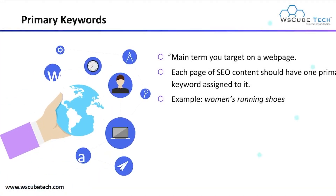In the case of primary keywords, these are the main terms you target on your web page. For example, if you want to design your website content or write a particular blog, you have to decide one primary keyword. That primary term is your primary keyword — it is the main term used in your particular content that tells the search engine what your content is about, and tells the user the relevancy of the keyword. Each page of your SEO content should have one primary keyword assigned to it, which you can use in your title, meta description, content body, and URL. Example: 'women's running shoes' as your primary keyword.